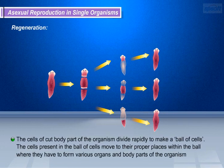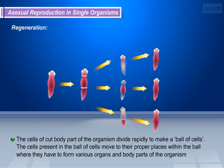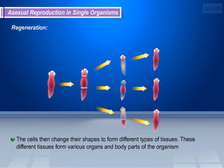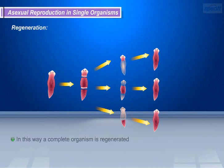This process takes place as follows. The cells of the cut body part of the organism divide rapidly to make a ball of cells. The cells present in this ball move to their proper places where they form various organs and body parts. The cells then change their shapes to form different types of tissues, and these different tissues form various organs and body parts of the organism.